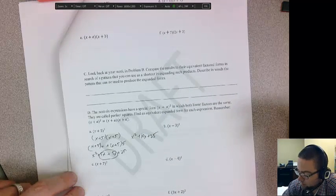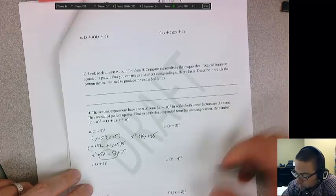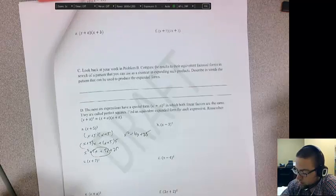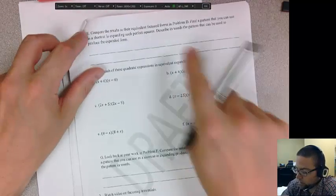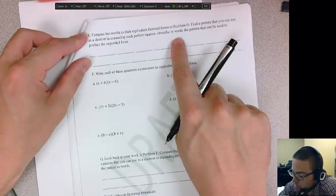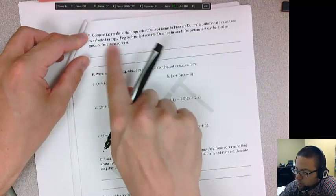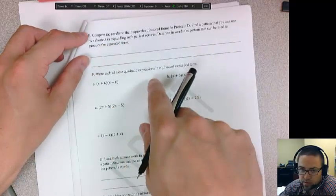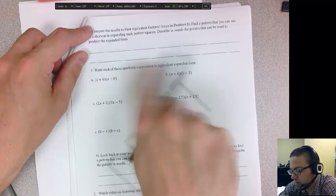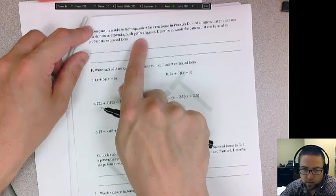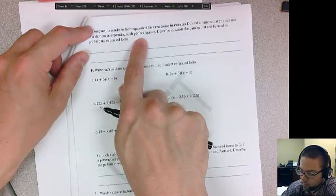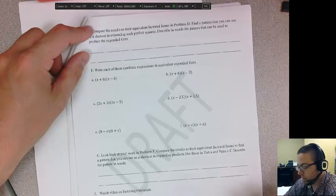And you would do that on all these, even with the negatives. And then here it says, look back on that work and do you see a shortcut? Is there a shortcut from expanding the perfect squares instead of doing that double distributive? Is there a shortcut that you could use for finding out what the perfect square of two binomials is?